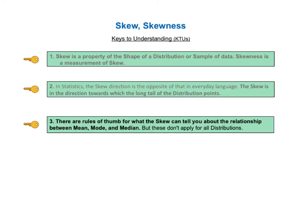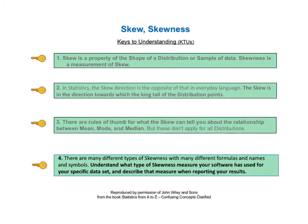KTU number three states, there are rules of thumb for what the skew can tell us about the relationship between the mean, the mode and the median, but these don't apply for all distributions. The fourth and final key states, there are many different types of skewness with many different formulas and names and symbols. Understand what type of skewness measure your software has used for your specific data set and identify that measure when reporting your results.